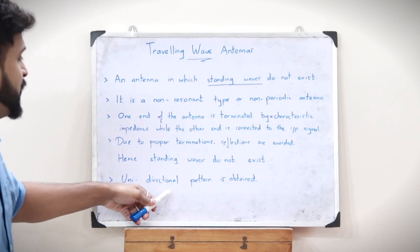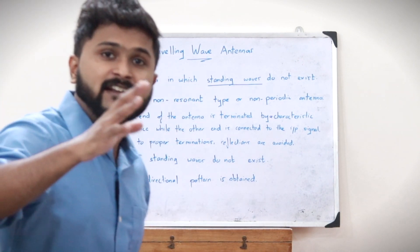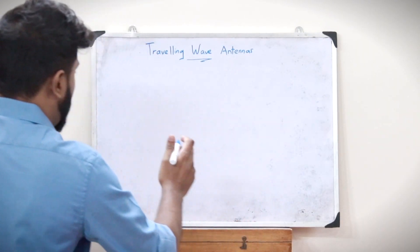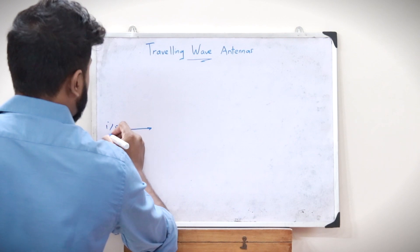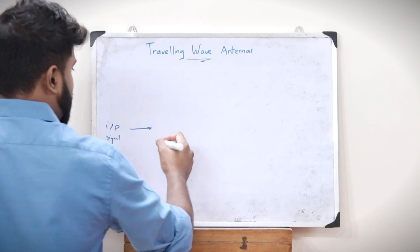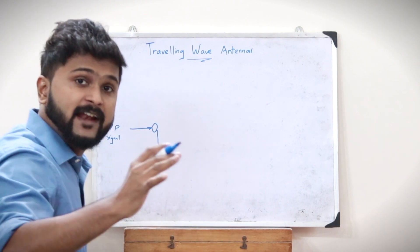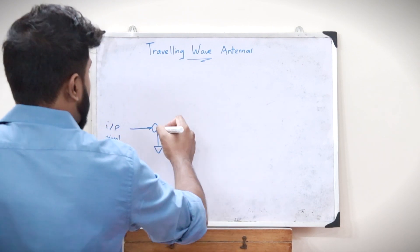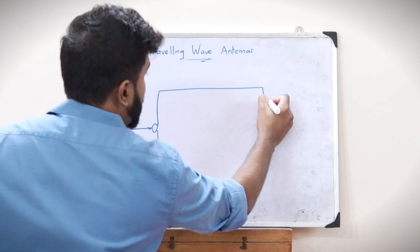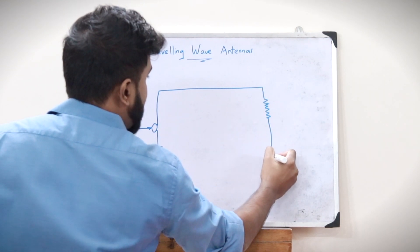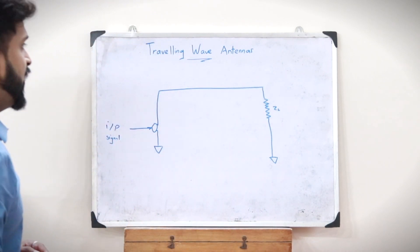A unidirectional pattern is obtained in such kind of antennas. Let us assume this to be the particular input signal. This input signal is fed to one end of the antenna, and the other end will be terminated by a particular characteristic impedance — let us take it as ZL.